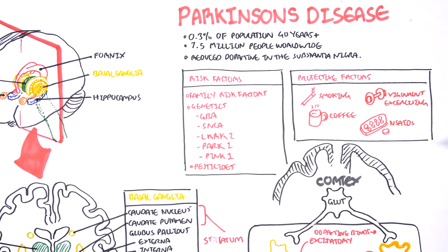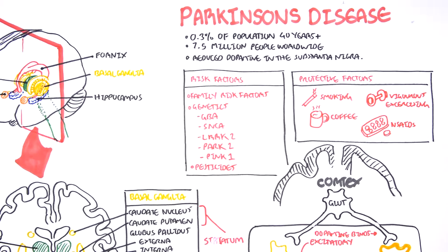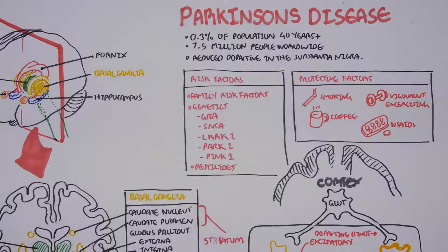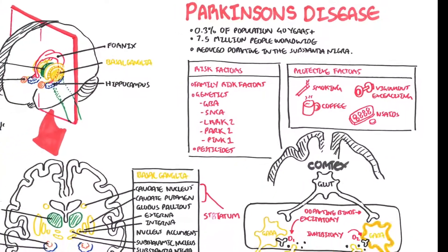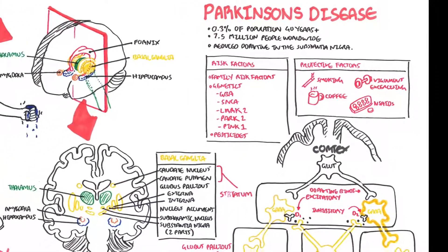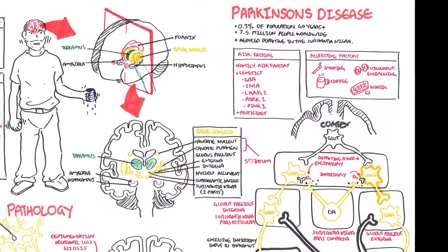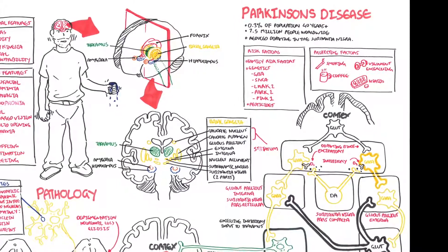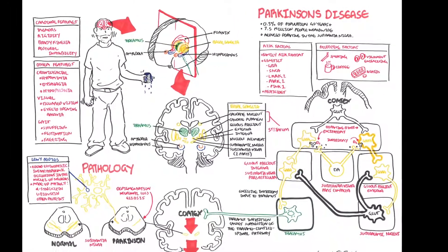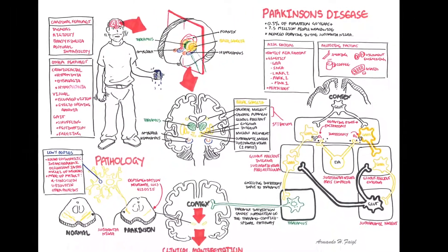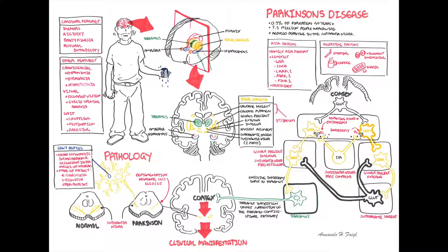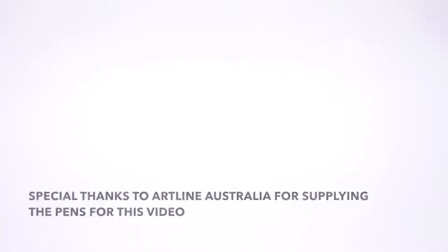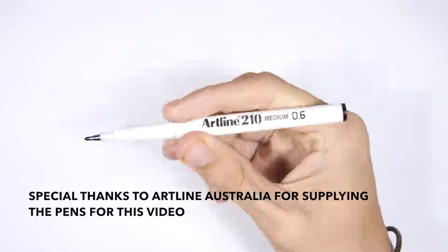That concludes this video on Parkinson's disease. We looked at the signs and symptoms, the neuroanatomy of the basal ganglia, the function of the basal ganglia and what occurs in Parkinson's disease, the pathophysiology, the pathology, and the risk and protective factors. Thank you for watching, I hope you enjoyed this video.